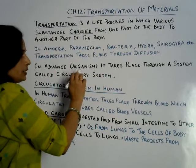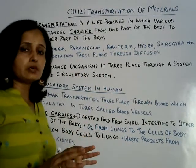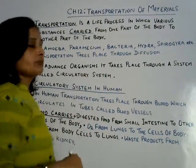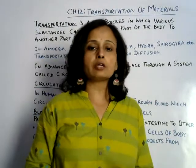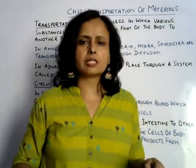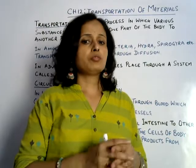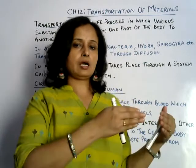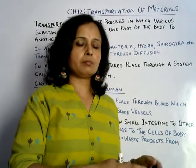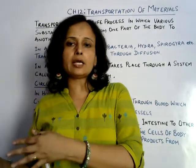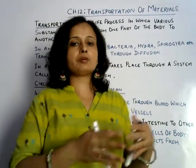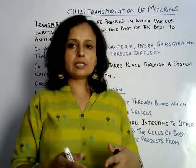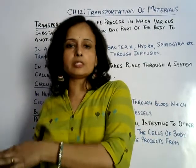In advanced organisms — organisms which are quite advanced — those organisms have a system called the circulatory system. That system carries out the process of transport of materials from one part of the body to another part of the body, depending on where the materials are found in abundance and where there is a lack. So basically transportation happens from abundance to lacking.